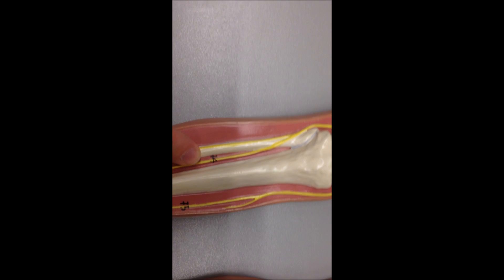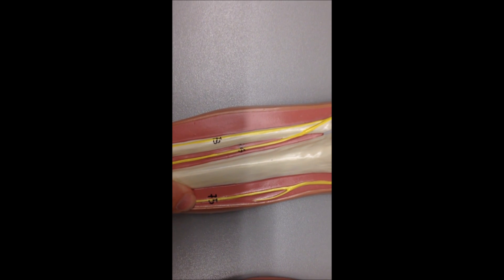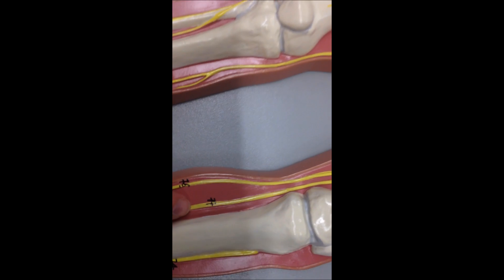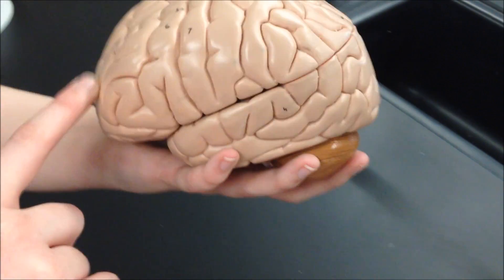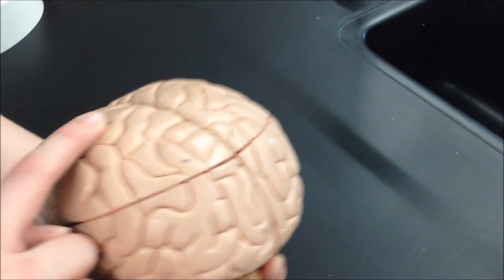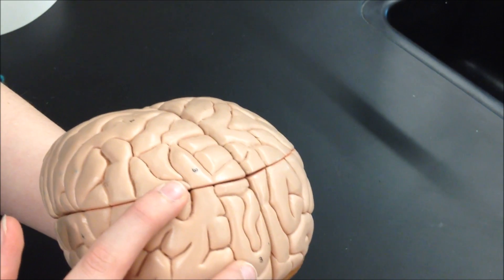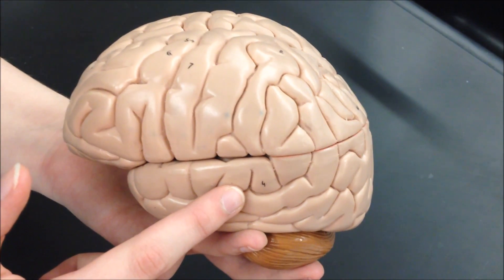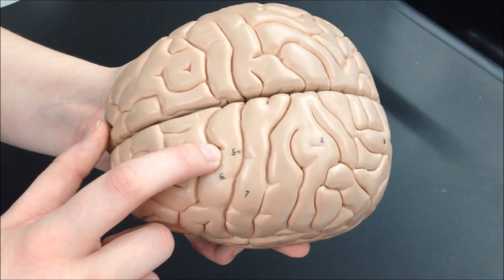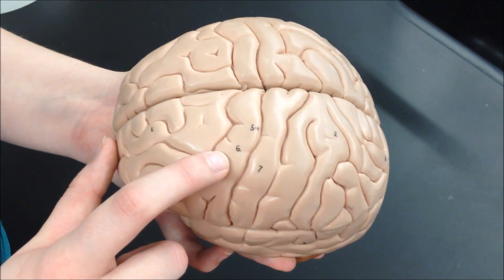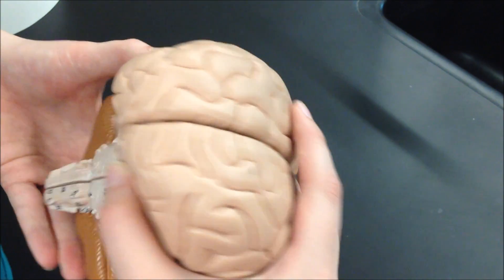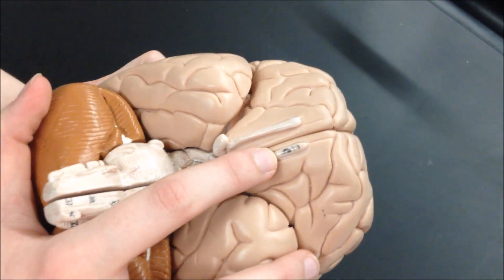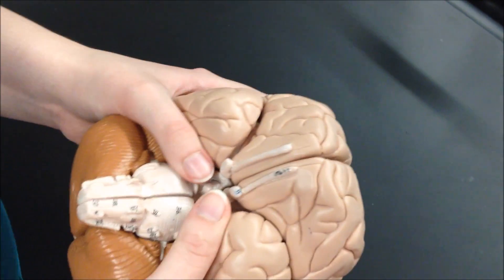Number 75 saphenous nerve, and then number 77 is the tibial nerve. Frontal lobe number 1, parietal lobe number 2, occipital lobe number 3, temporal lobe number 4, central sulcus number 5, precentral gyrus number 6, post-central gyrus number 7, olfactory bulb number 8. Then we'll split it open.